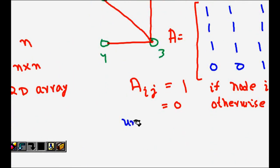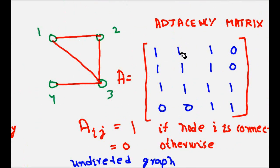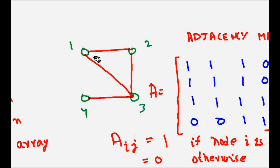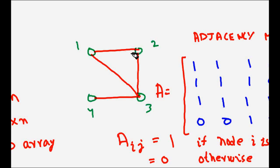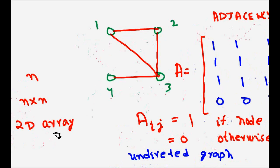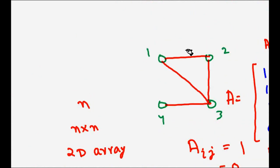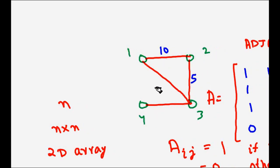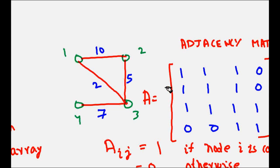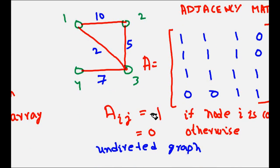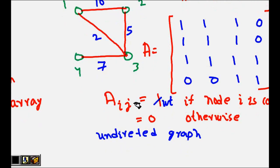This is an undirected graph, where direction doesn't matter — going from 1 to 2 is the same as 2 to 1. Now let's consider weighted edges. If nodes represent cities, the distance between 1 and 2 might be 10 km, between 2 and 3 is 5, between 1 and 3 is 2, and between 3 and 4 is 7. For a weighted graph, A[i][j] = the weight of that edge.